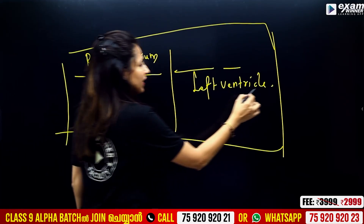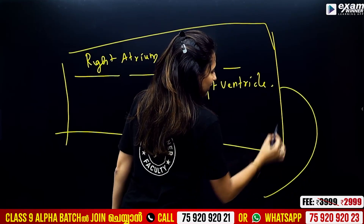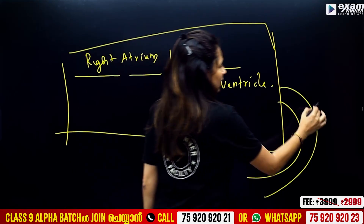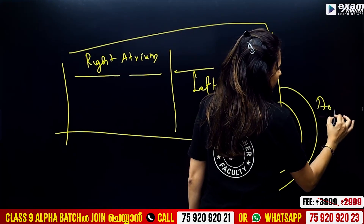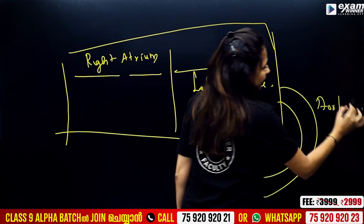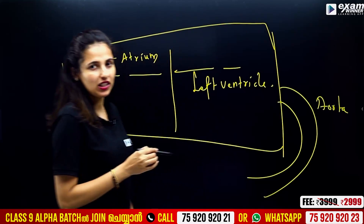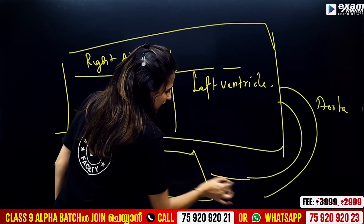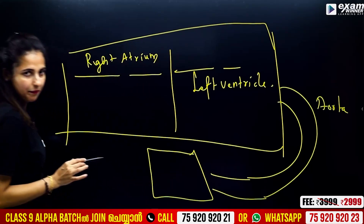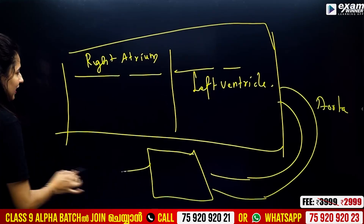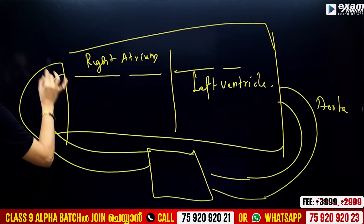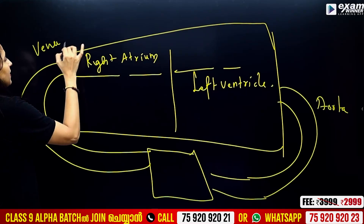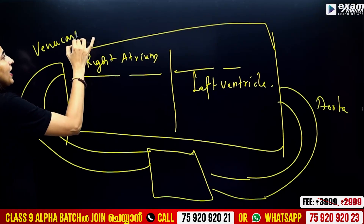What is the blood vessel here? The right atrium receives blood. Where is the body? The body has different parts and different tissues. The blood vessel returns to the right atrium from the body.